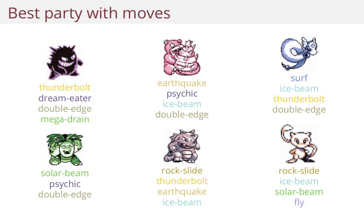Which is partly why I made the assumption that the type of moves that a Pokemon has corresponds to the type of the Pokemon itself. But this is what the model gives you if you run it, including moves for each Pokemon.